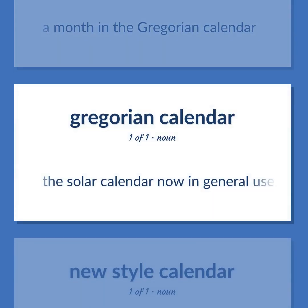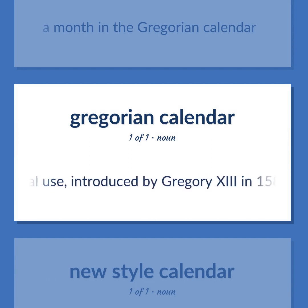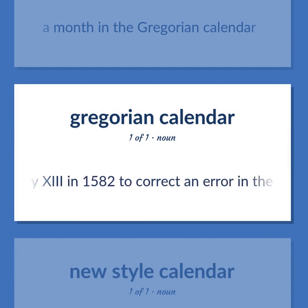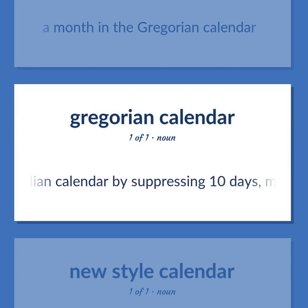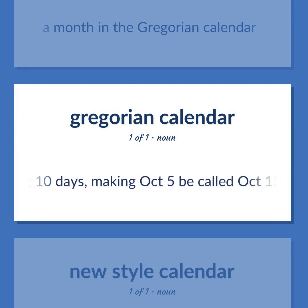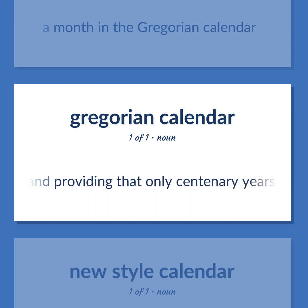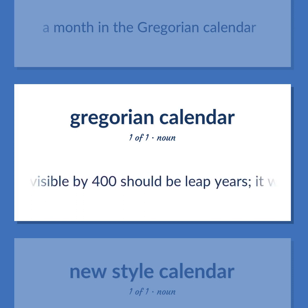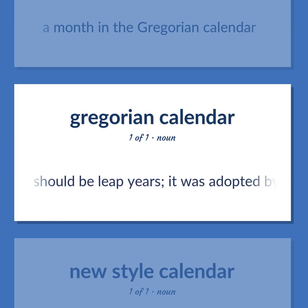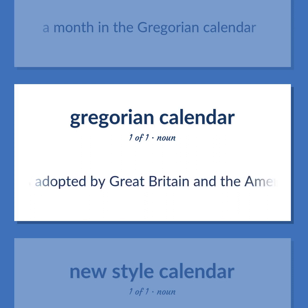The Gregorian Calendar: the solar calendar now in general use, introduced by Gregory XIII in 1582 to correct an error in the Julian Calendar by suppressing 10 days, making October 5 be called October 15, and providing that only centenary years divisible by 400 should be leap years. It was adopted by Great Britain and the American colonies in 1752.